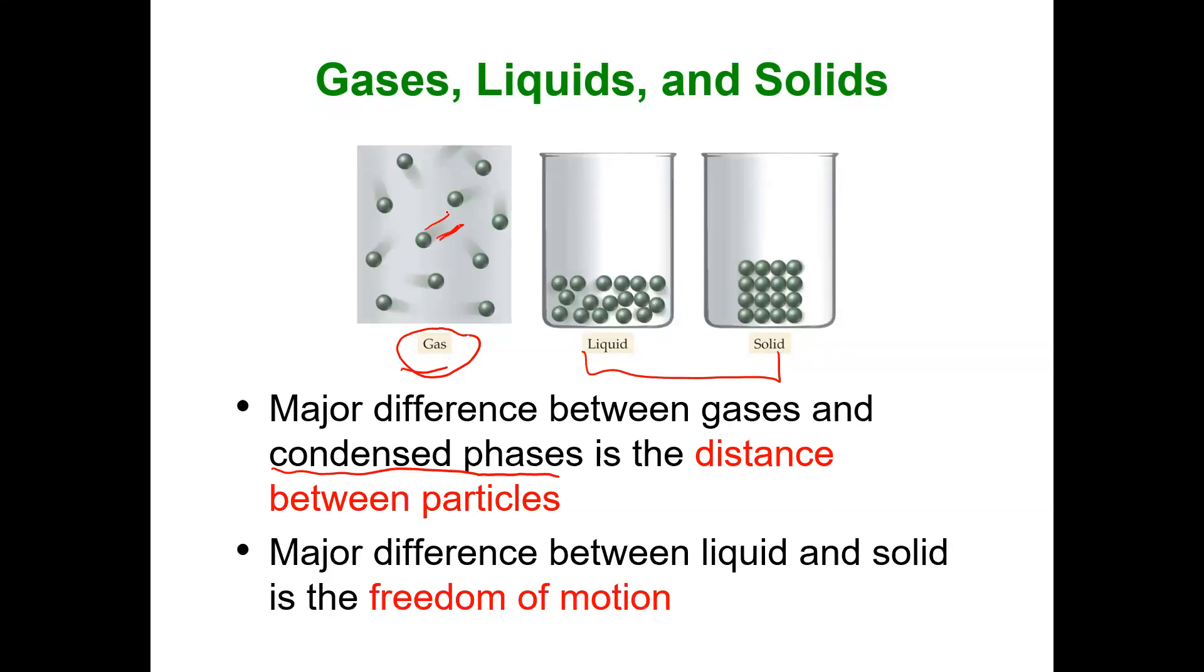The major difference between the condensed phases, the liquid and the solid, is what's referred to as freedom of motion. Now, it's harder to pick that in a 2D flat, non-moving image. But essentially, you can think of liquid particles, even though they're very close to one another, they can kind of slip and slide on top of each other.